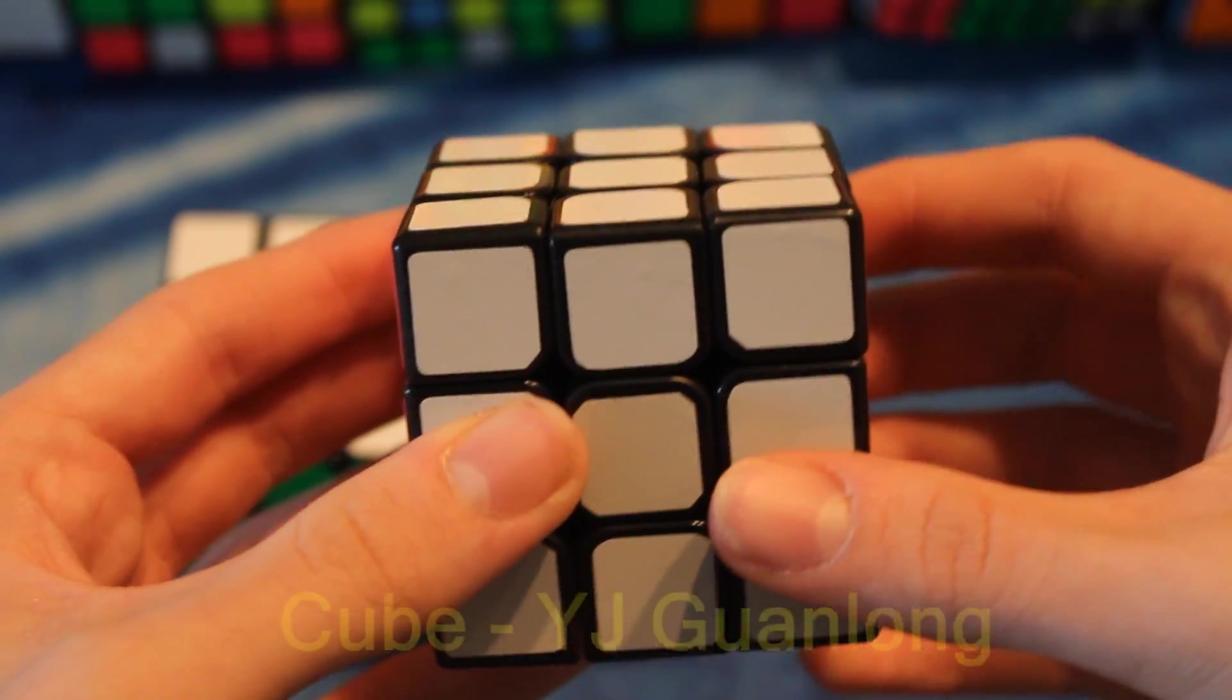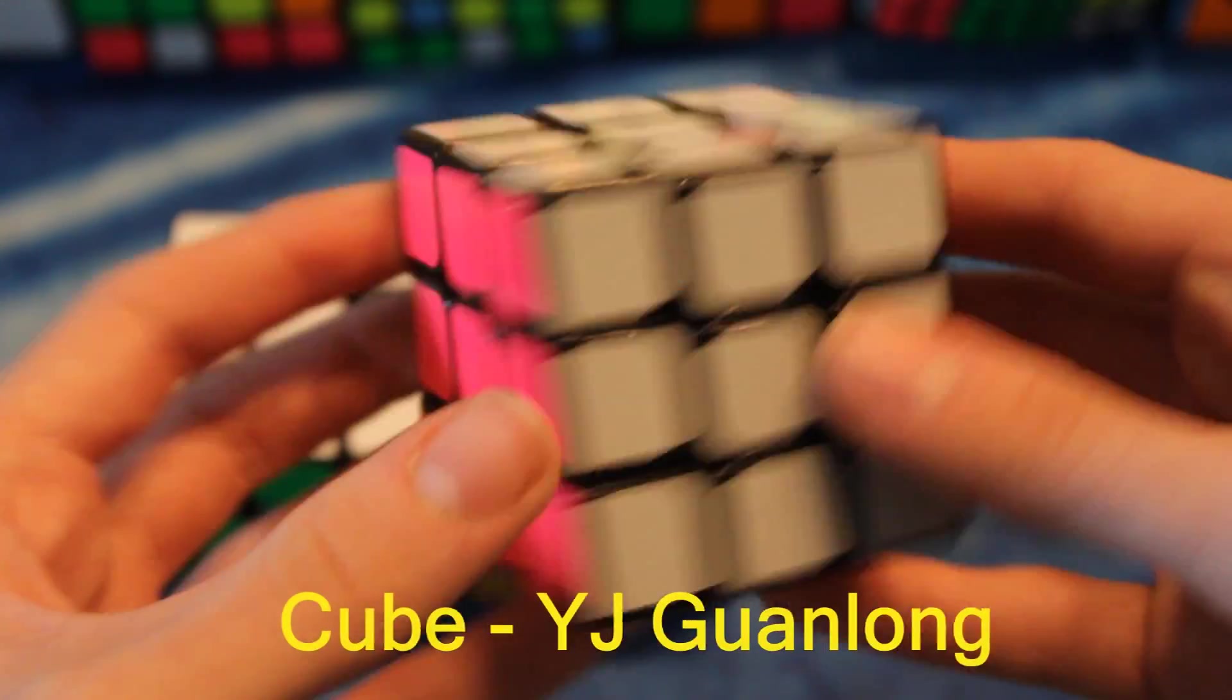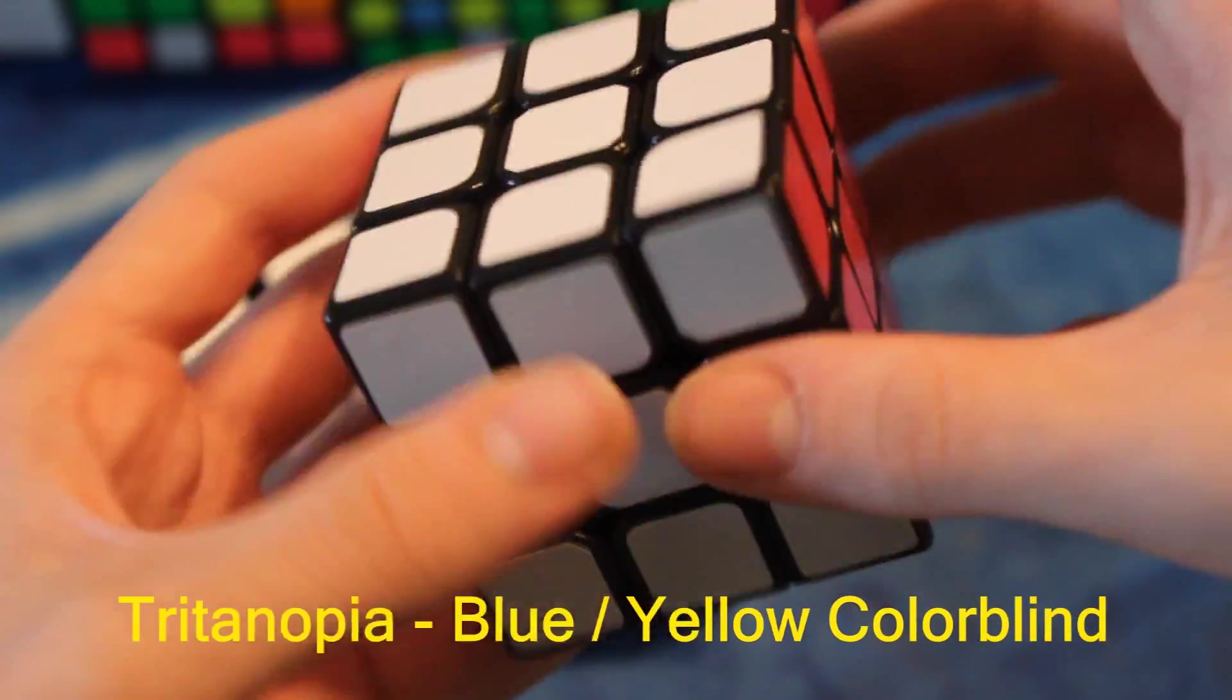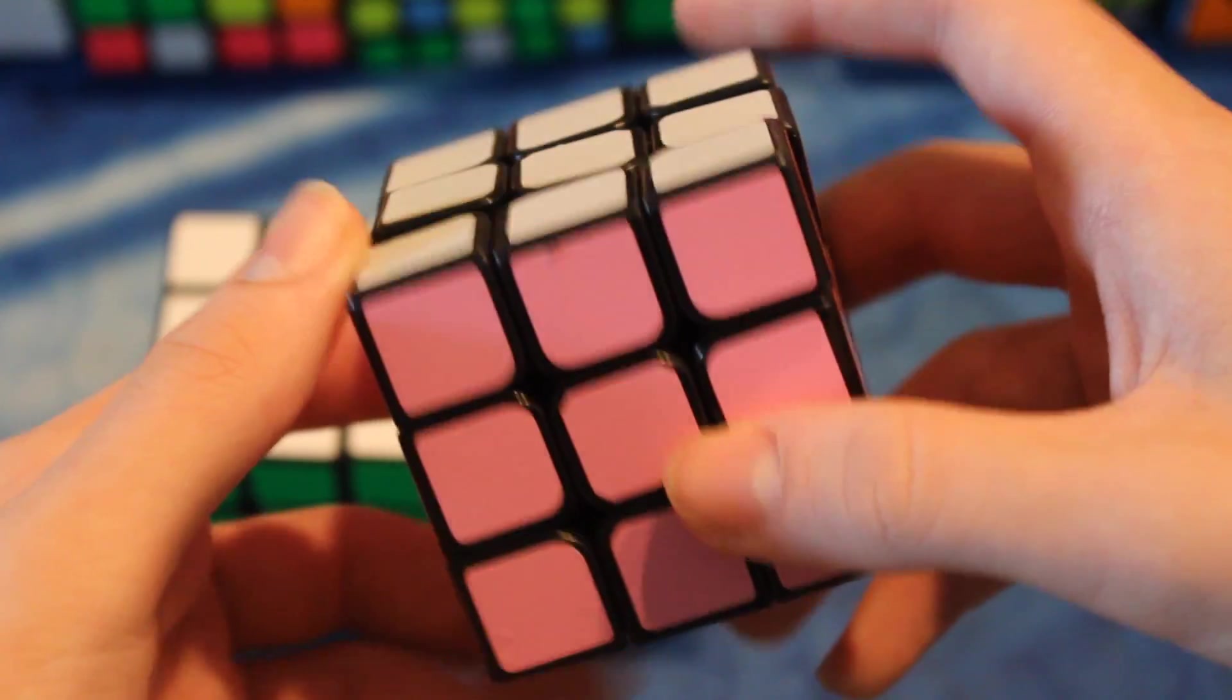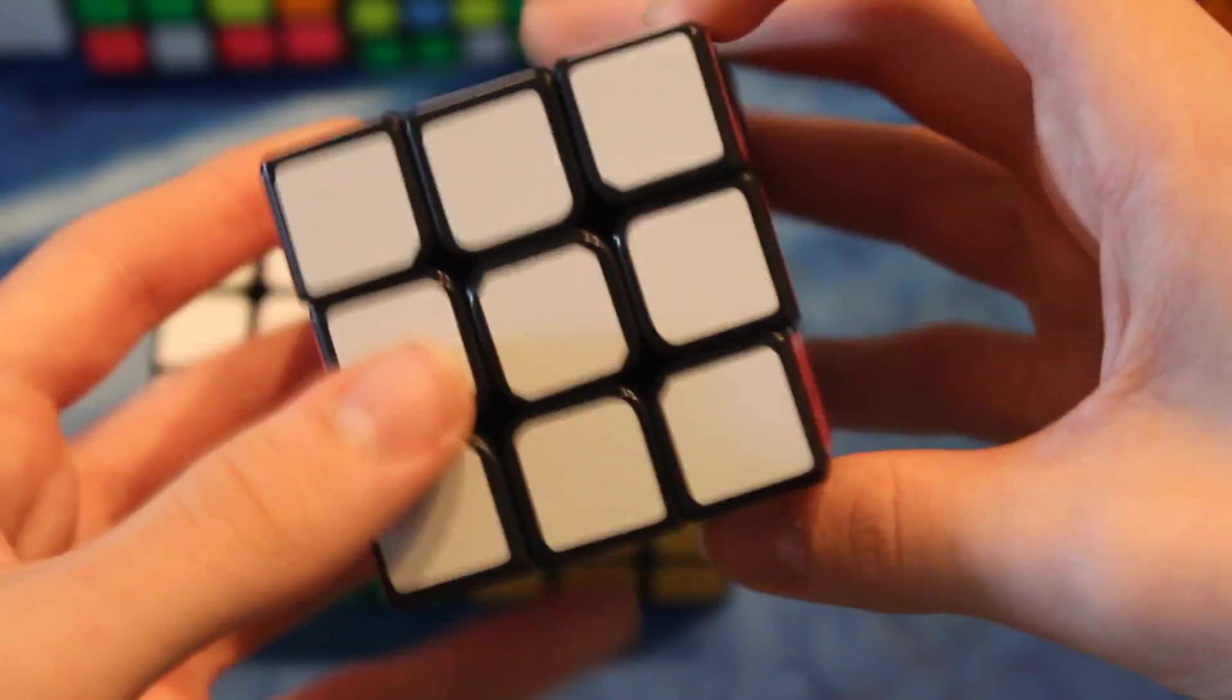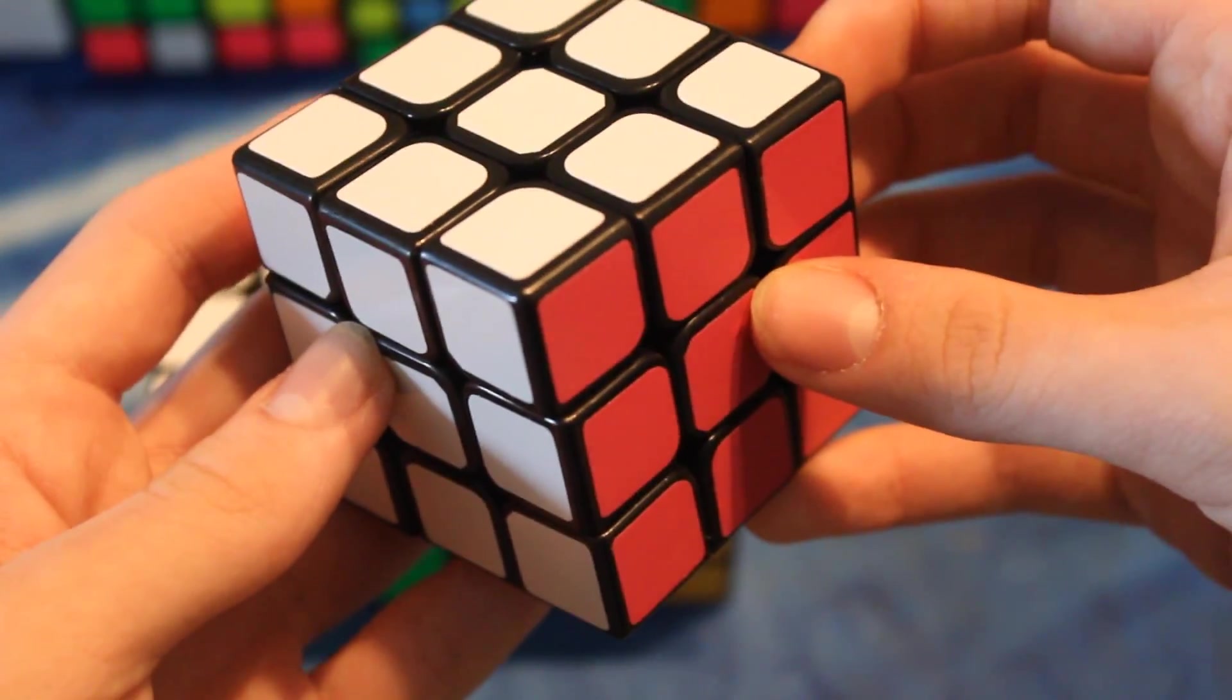This next cube is an example of Tritonopia, which is blue-yellow colorblindness. This is the white, this is green, this is yellow, this is blue, this is orange, and this is red.